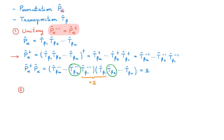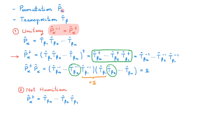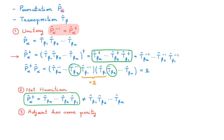A second important property is that unlike transpositions, which are Hermitian, a general permutation may not be Hermitian. Starting with the adjoint of the permutation and using the fact that transpositions are Hermitian, we can write the adjoint of the permutation as the reverse sequence of transpositions. But transpositions don't commute in general, so we cannot rearrange this sequence to recover the original, meaning general permutations may not be Hermitian. The final property is that the adjoint of a permutation has the same parity as the original permutation, since the adjoint is simply the same sequence of transpositions in reverse order.